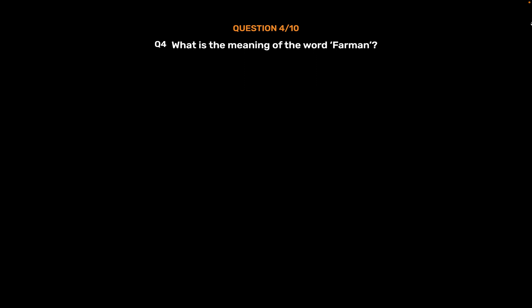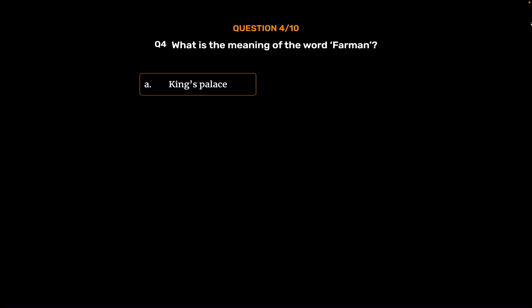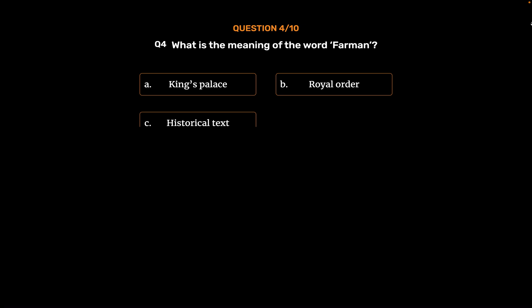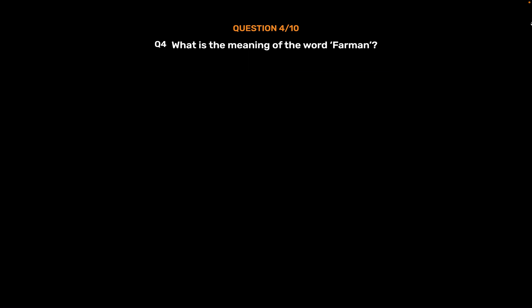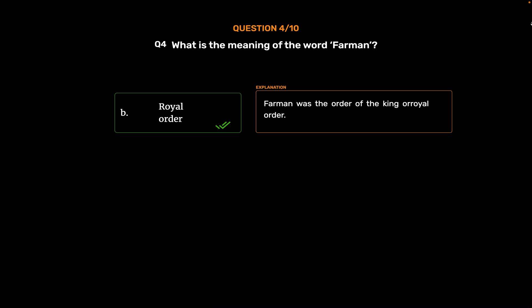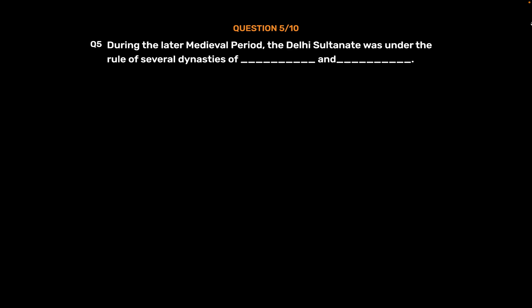Question No. 4. What is the meaning of the word 'farman'? Option A: King's palace. Option B: Royal order. Option C: Historical text. Option D: Religious scripture. The correct answer is Option B: Royal order. Farman was the order of the king, or royal order.